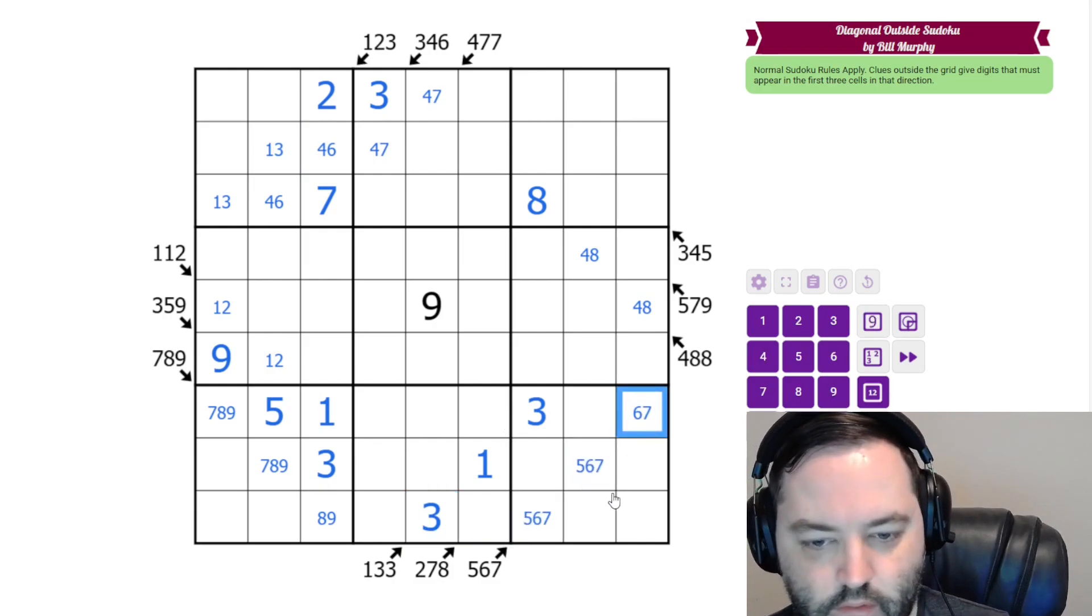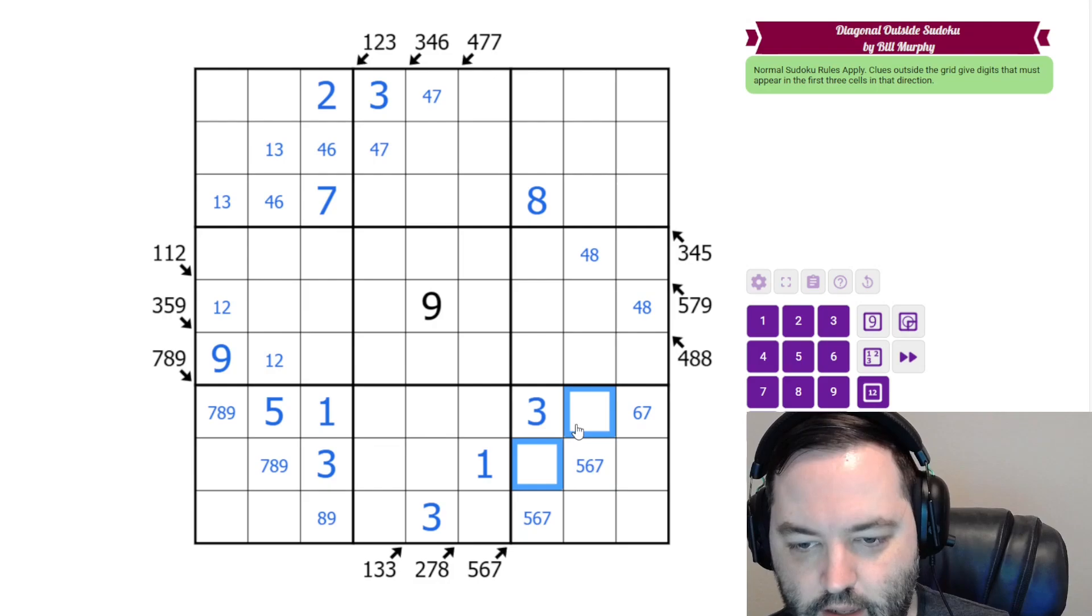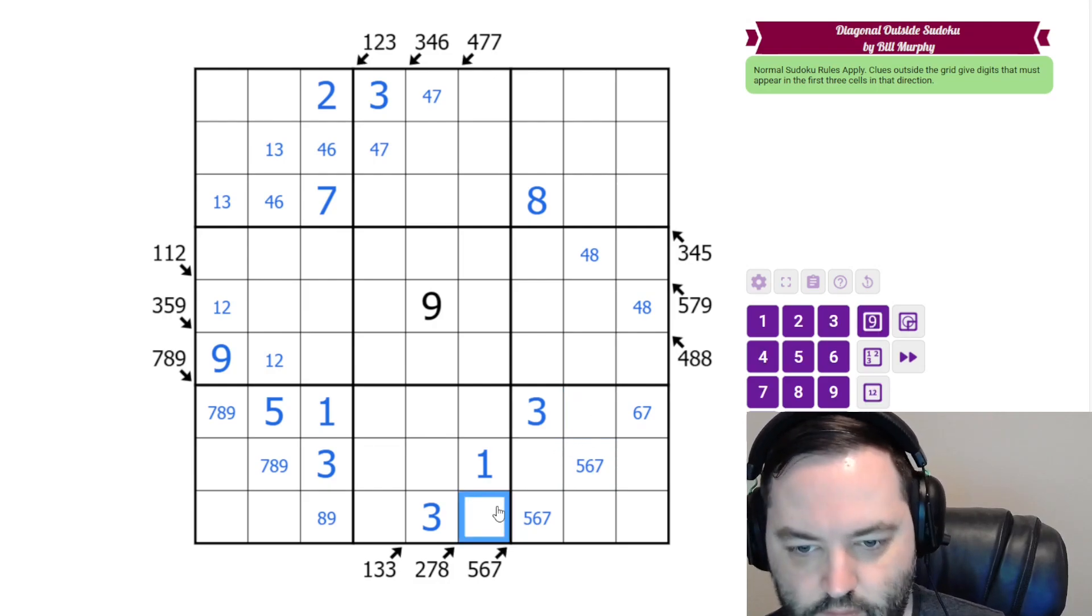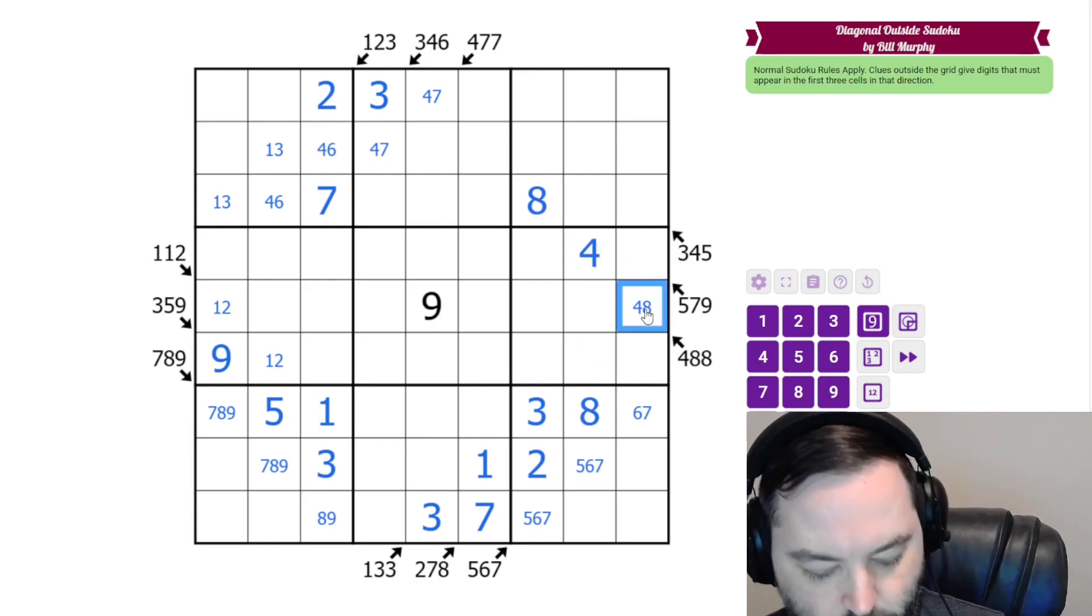These are 5, 6, 7. It can't be 5. And these two cells now can't be 7. So this is our 7. And we get 2 and 8 because of the 8 here. The 8 resolves 4 and 8.